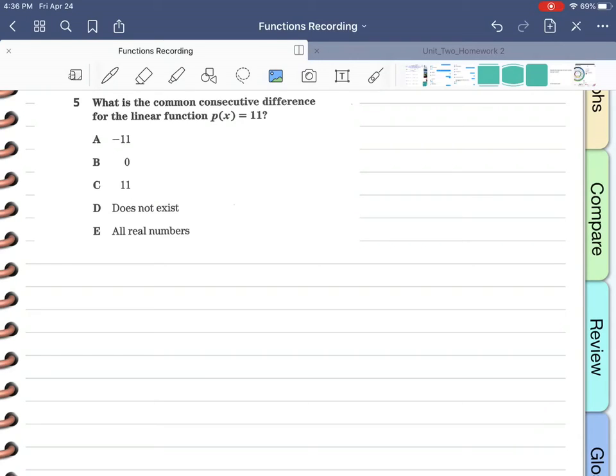So they give me three number values. They say that we could have a common consecutive difference of -11, 0, or 11. We have the option of does not exist and then all real numbers.